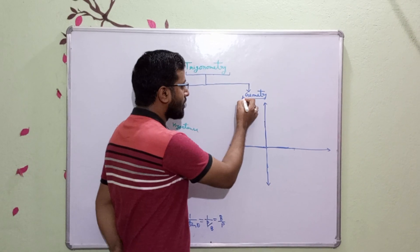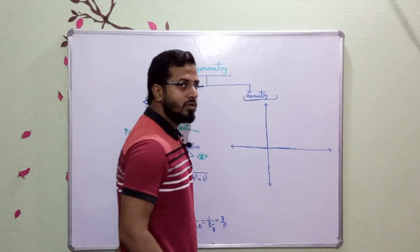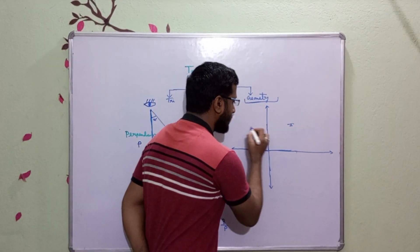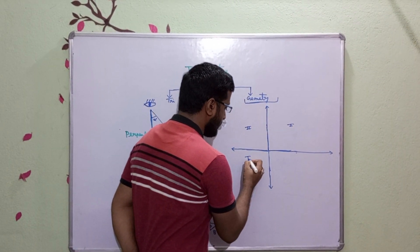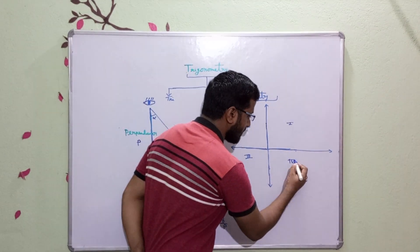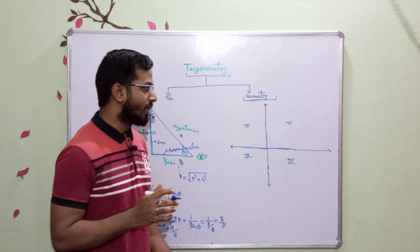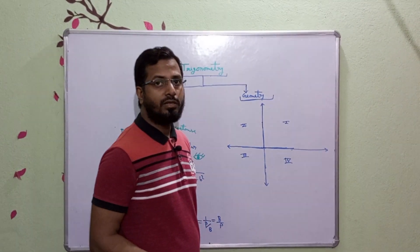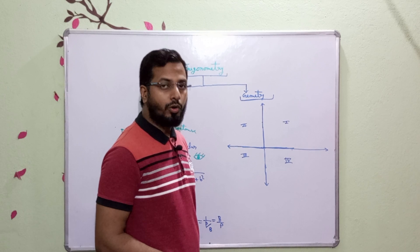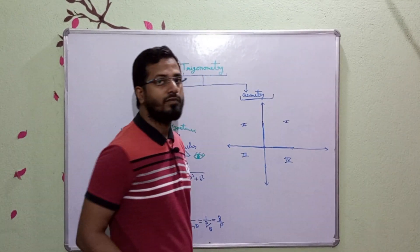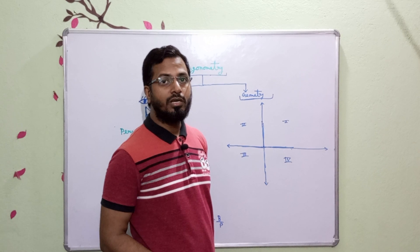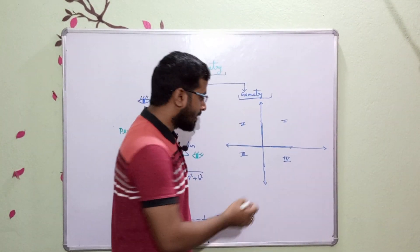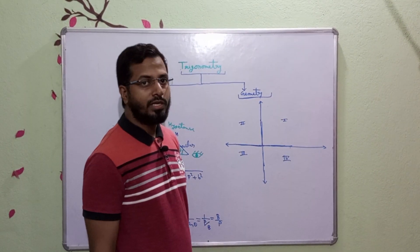Now we move to the geometry topic. There are four quadrants: first, second, third, and fourth. When we move in this direction, the value is positive. When we move in this direction, the value is also positive. When we move in this direction, the value is negative, and when we move in this direction, the value is also negative.